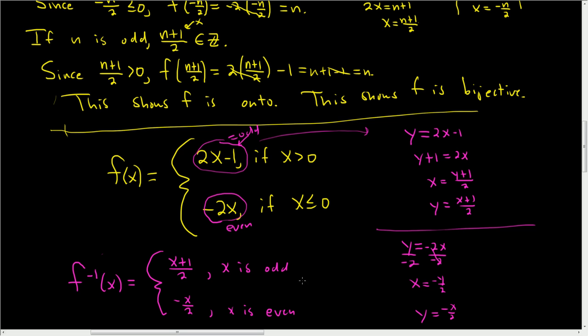To be more precise: for odd, x takes values 1, 3, etc. For even, we start at 0: so 0, 2, 4, etc. The proof and the inverse are now complete.